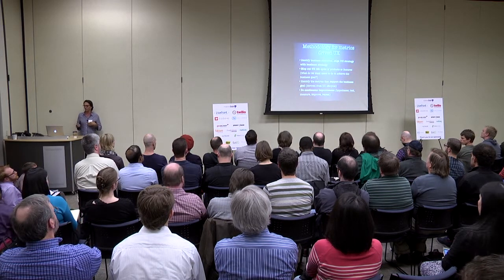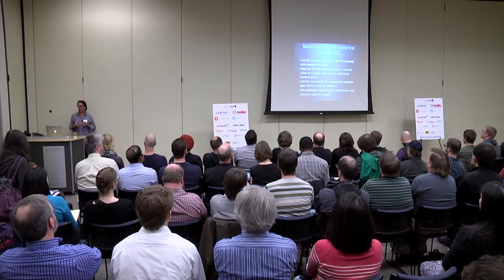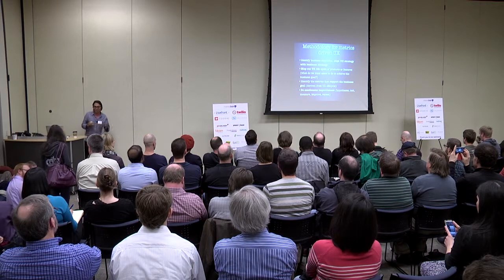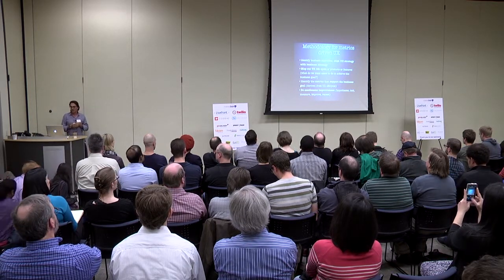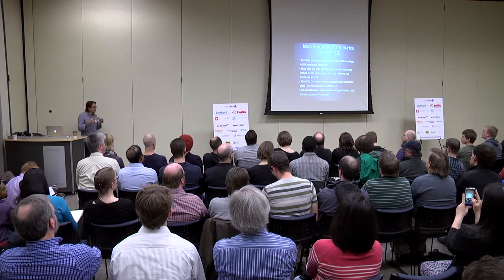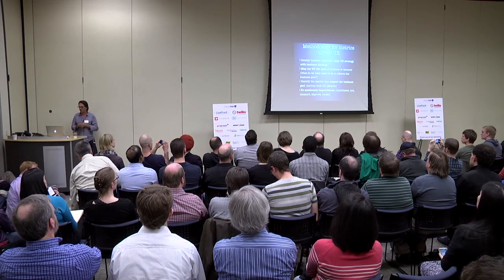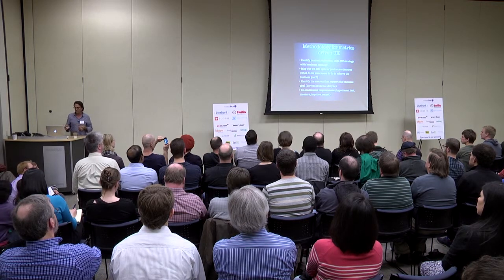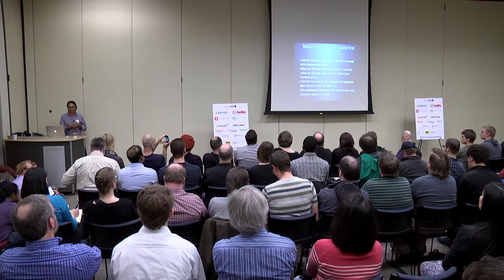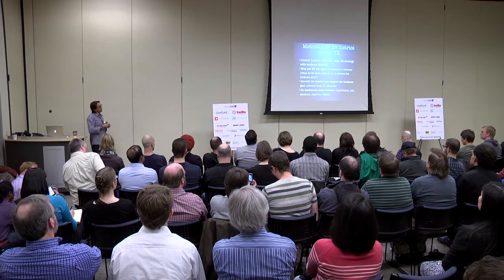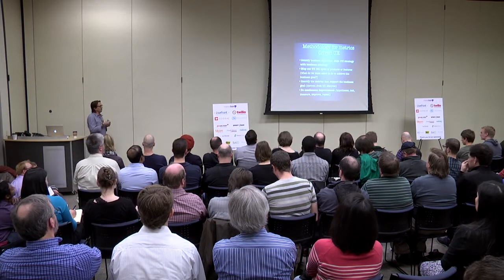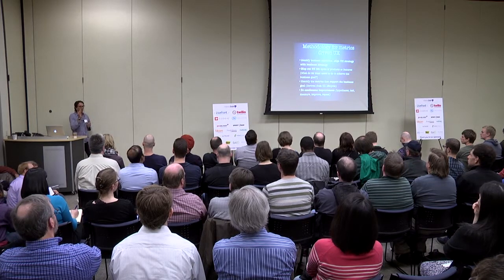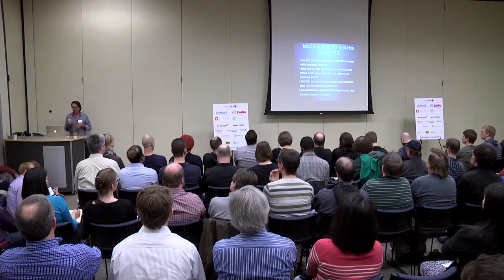A quick rundown of a methodology we use for metrics-driven UX at NativeX. First, we identify our business objectives and align our UX strategy with business strategy, so everything we're doing is tightly mapped to our overall business goals. Then we map out our UX lifecycle for the products, features, or ad units we're developing to achieve that business objective. We identify the metrics that support the business goal, derived directly from the UX lifecycle. We'll say these are the things we want to have happen, these are the metrics attached to them, and we're going to try to increase their performance over time. Then we understand if our design decision is working, and iterate if it's not.